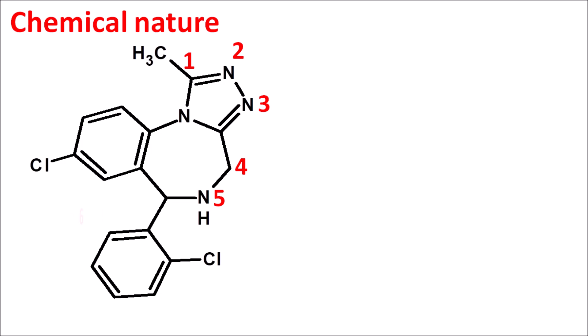Continuing the numbering: 6, 7, 8, 9, 10. The electron-withdrawing group is generally present at the seventh position in benzodiazepines, but in this fused ring system it is present at the eighth position.